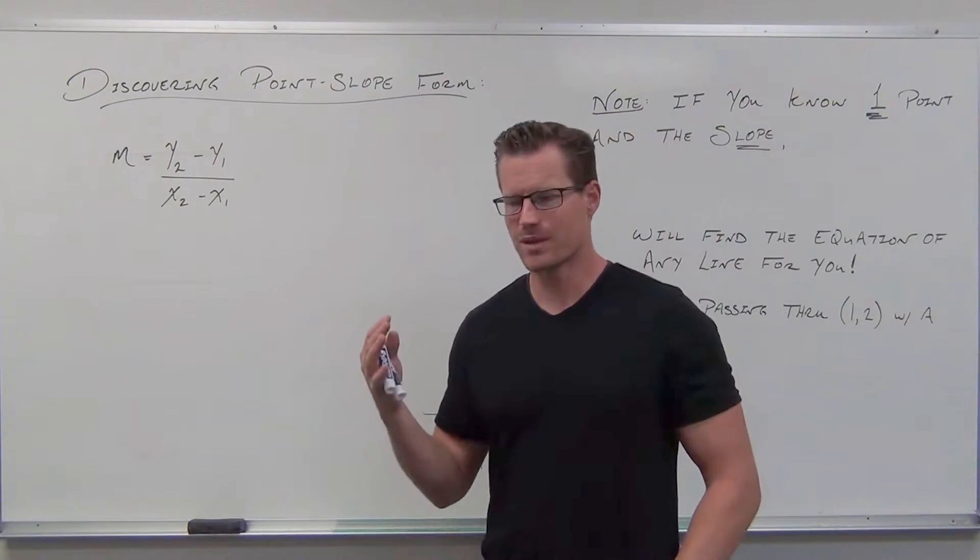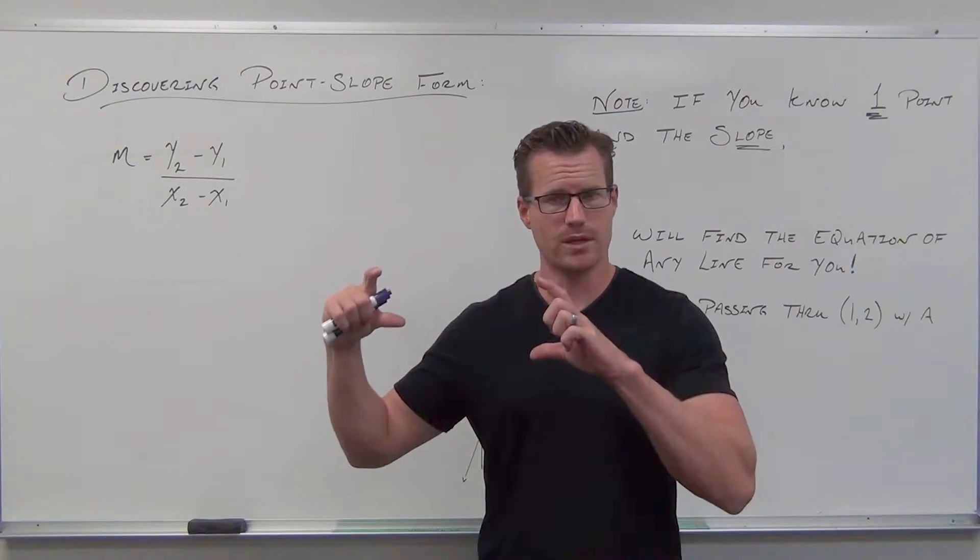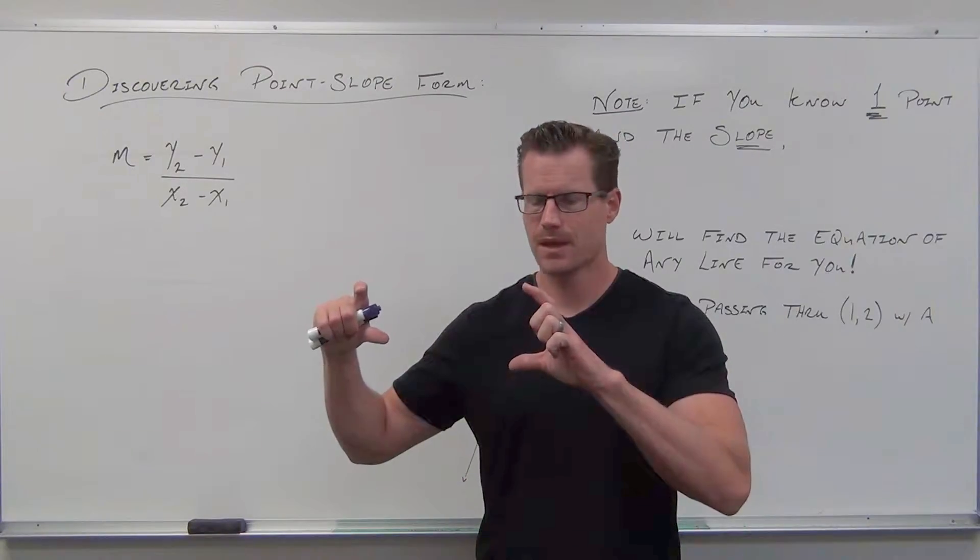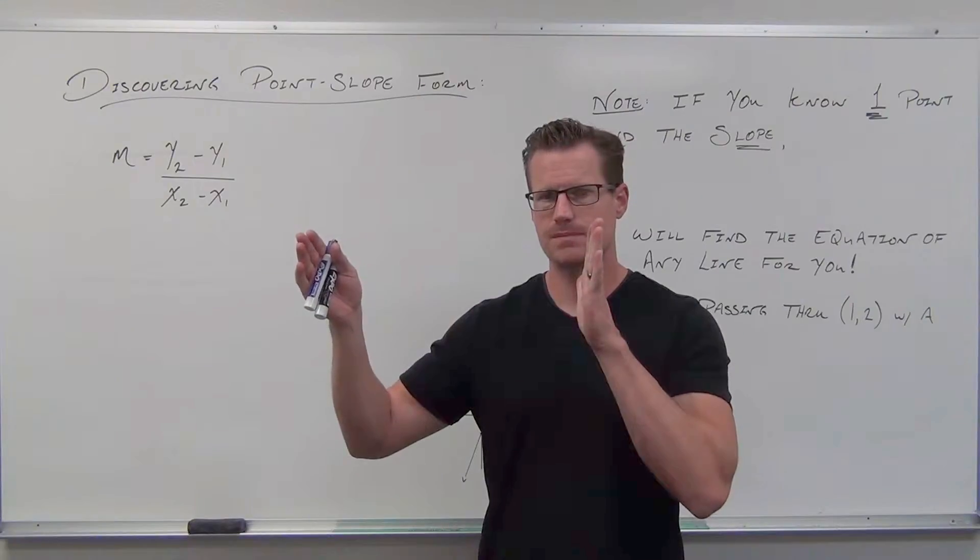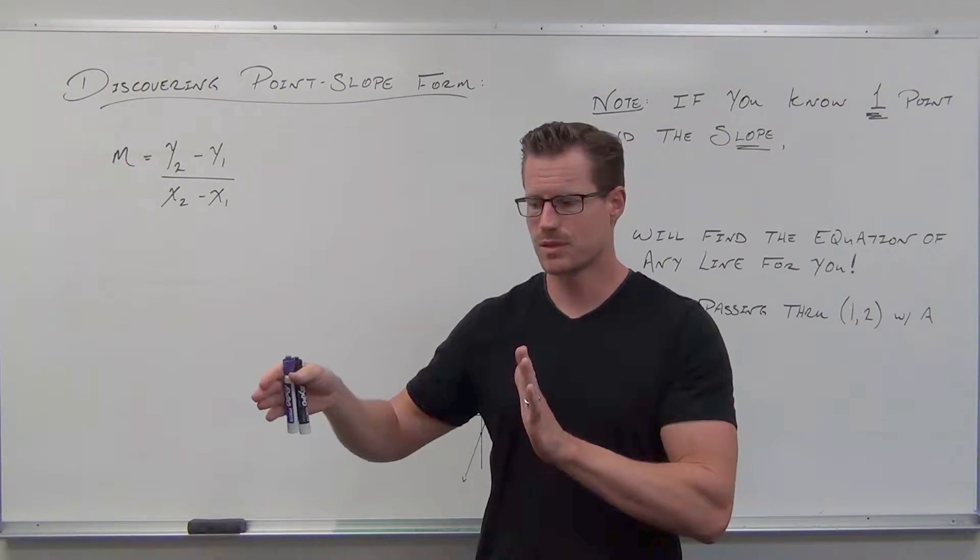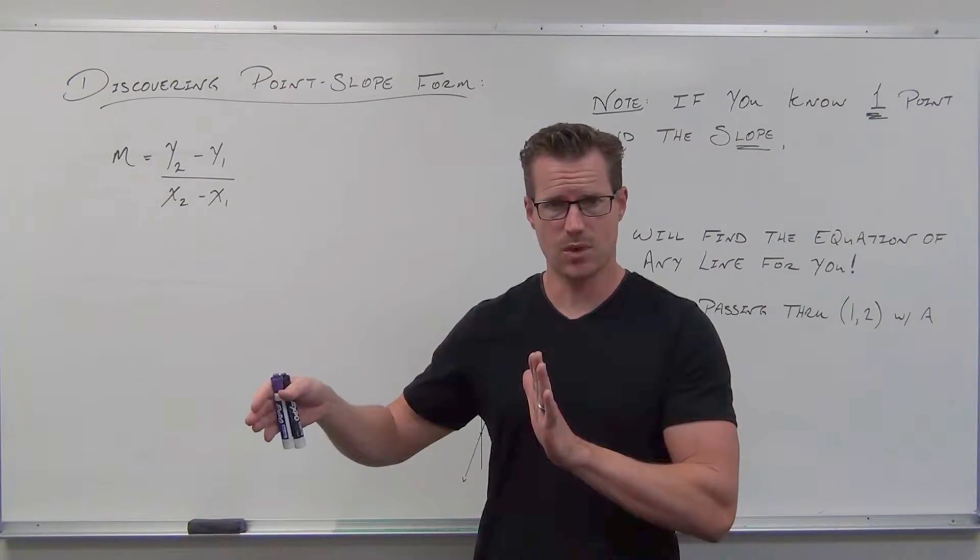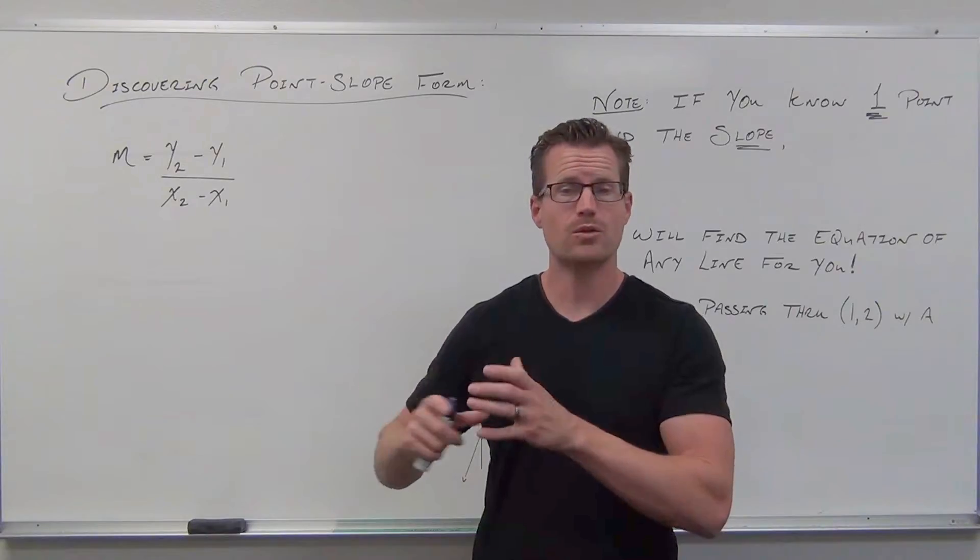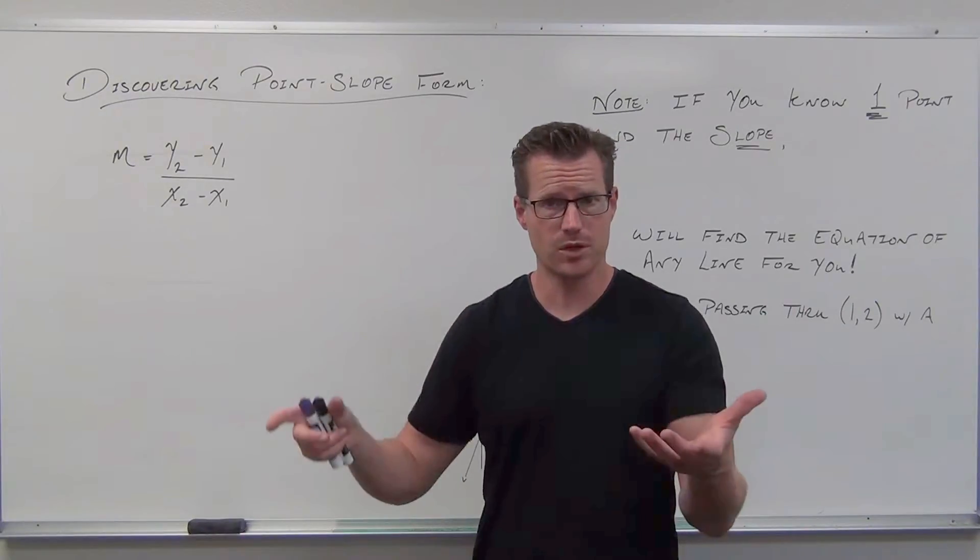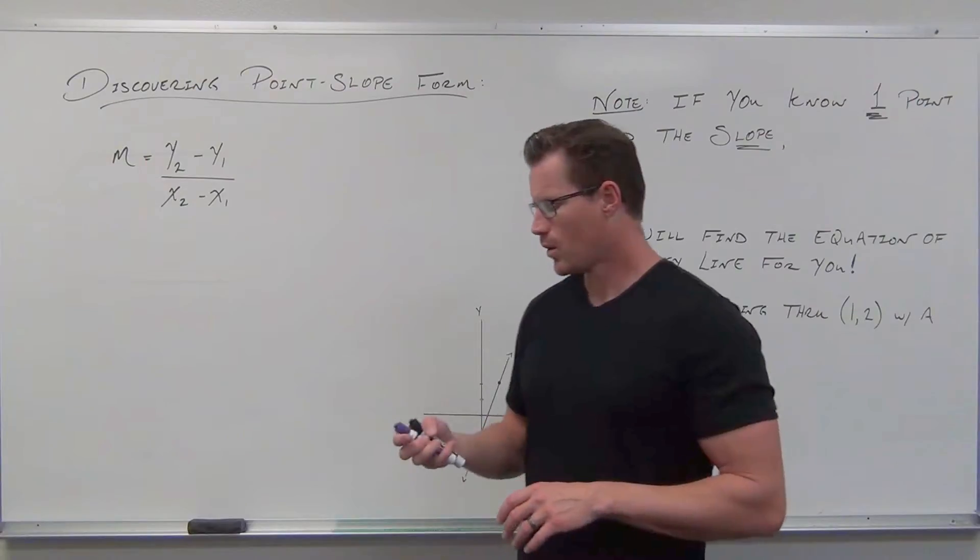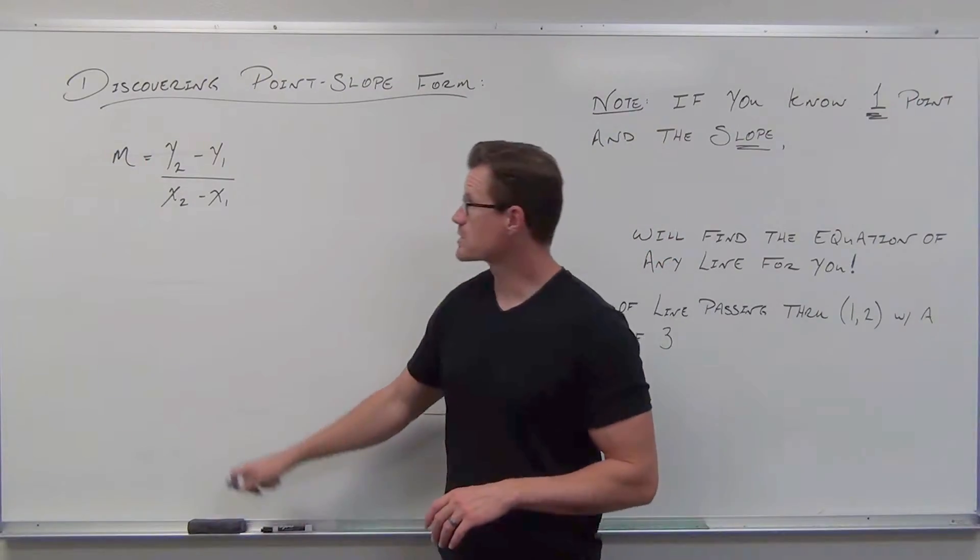The slope formula takes two solid points, two definite points, finds the difference between the y's, that's the rise, finds the difference between the x's, that's the run, and it puts them in ratio. That creates the rise over run, the slope that we're used to.